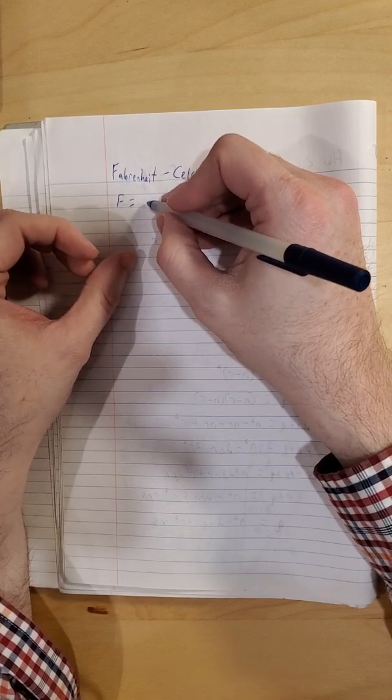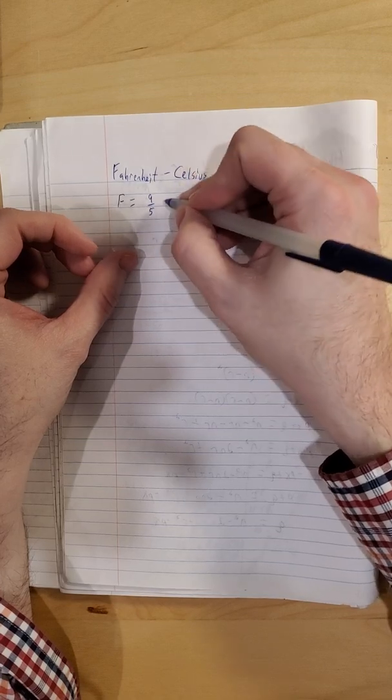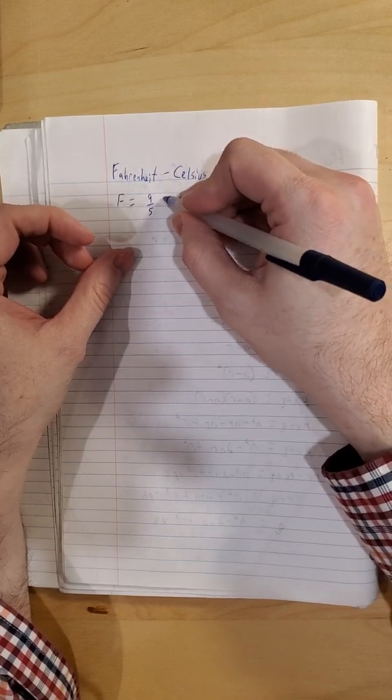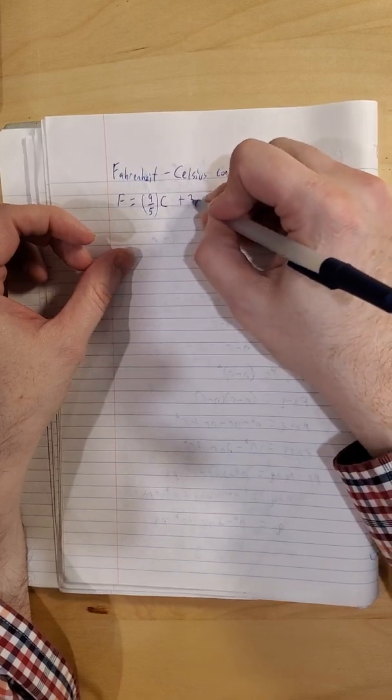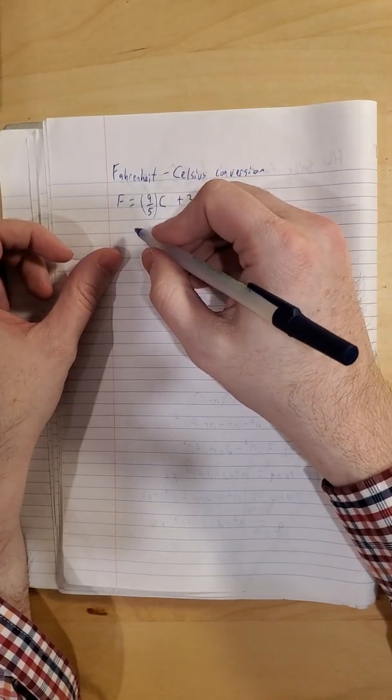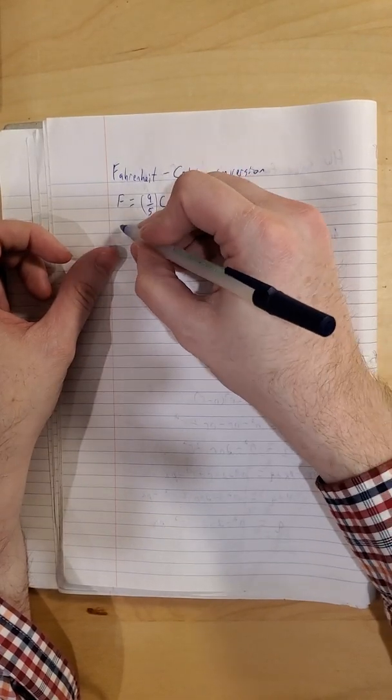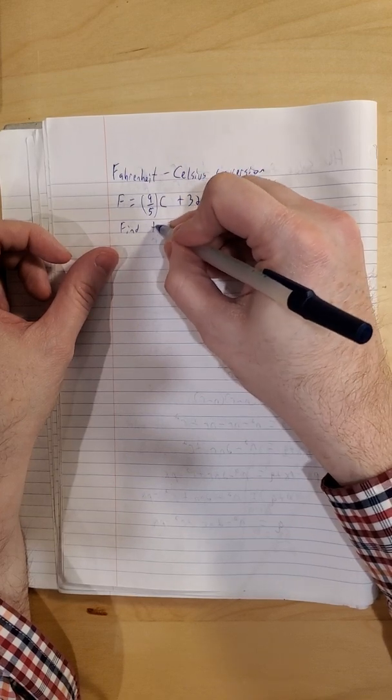For now, the book just hands us the information that Fahrenheit is nine-fifths of the temperature in degrees Celsius plus 32. That number should sound familiar in the Fahrenheit scale. So they may sometimes just ask us to apply it. So find the temp in degrees Fahrenheit.